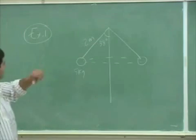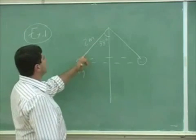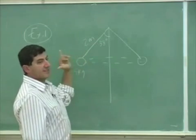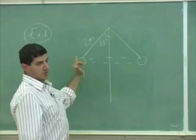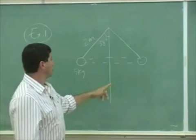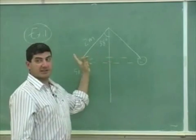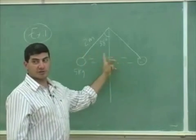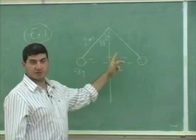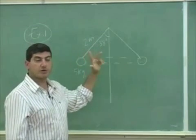Let's say if the breaking tension in the string is 30 newtons, what's the shortest period that this ball can have? What's the shortest period?